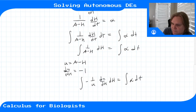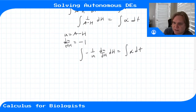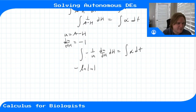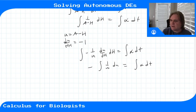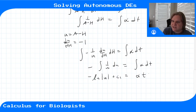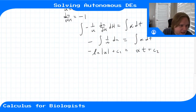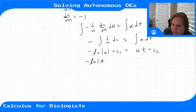So this becomes: minus the integral of 1/u du equals the integral of alpha dt. That gives us minus ln|u| plus a constant equals alpha*t plus another integration constant. Substituting back u = a - H, we get: minus ln|a - H| equals alpha*t plus C₃, combining the constants.